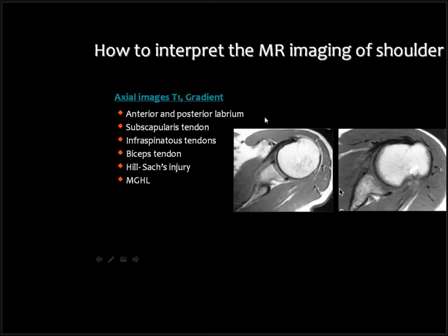On axial sections, we can see the subscapularis muscle, tendon, and insertion; and the infraspinatus muscle, tendon, and insertion. We can see the biceps in between, and the transverse humeral ligament above. We can see the anterior and posterior labrum. In the anterior labrum, we can see the middle glenohumeral ligament also.